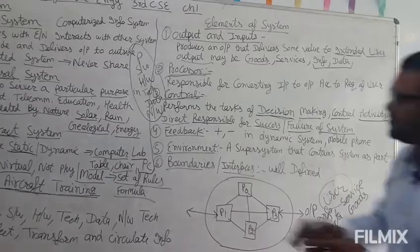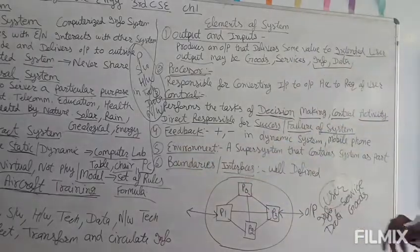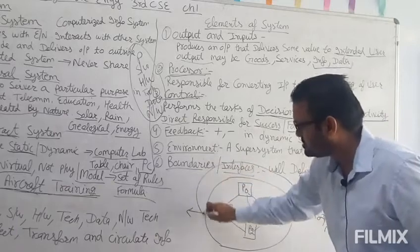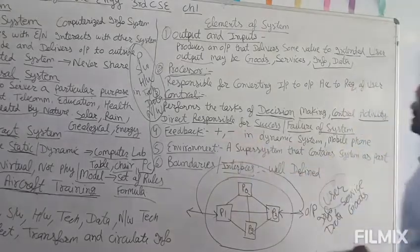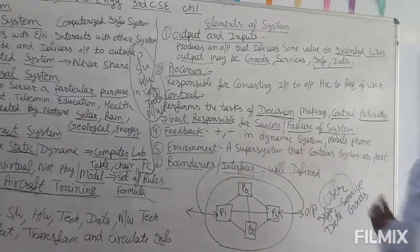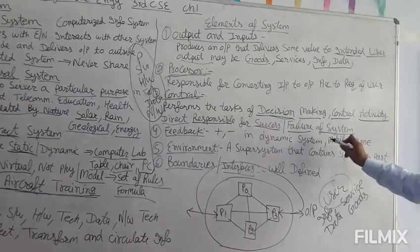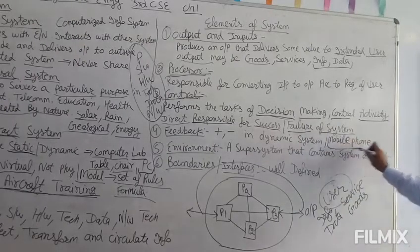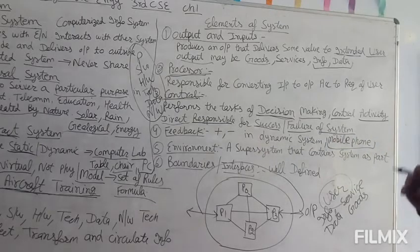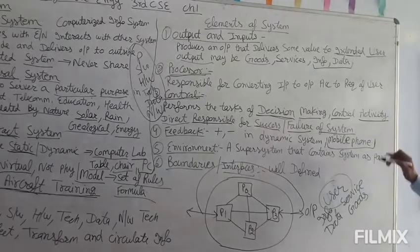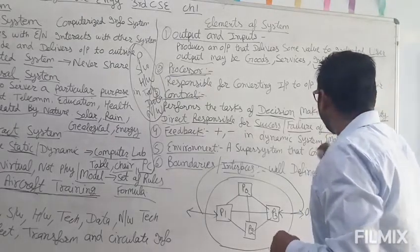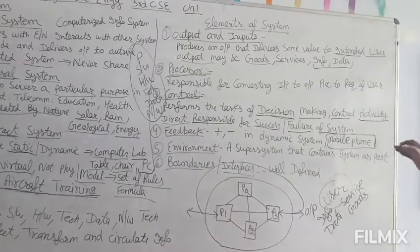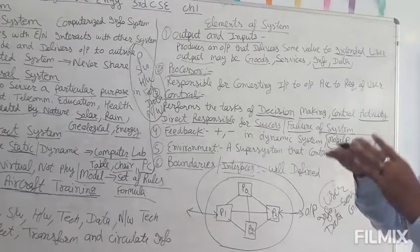Number four is feedback. Feedback may be positive or negative. It is found in dynamic systems. For example, a mobile phone manufacturing company launches a mobile phone and gives it to some users for testing purposes. If the test is passed, then it will be launched in the market.